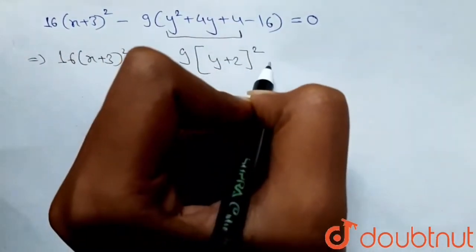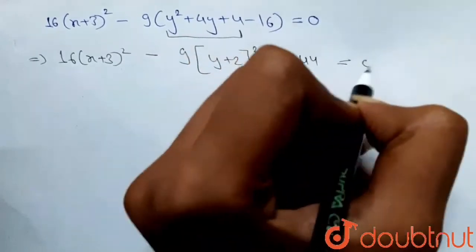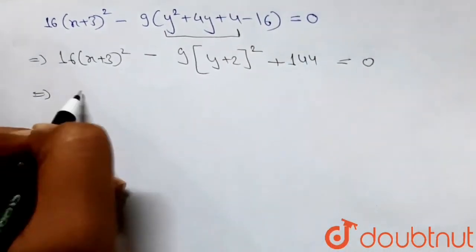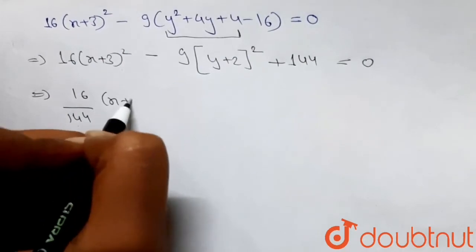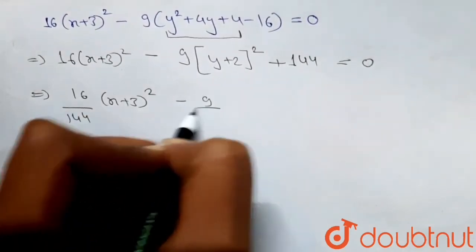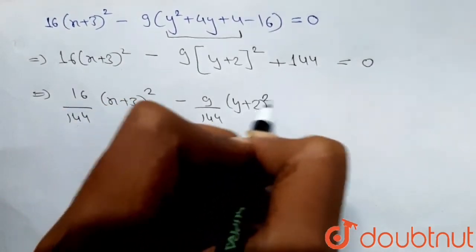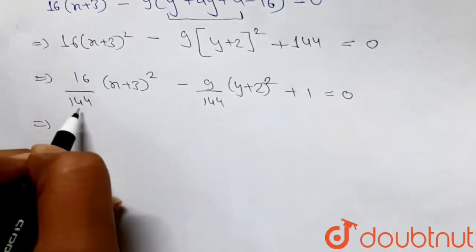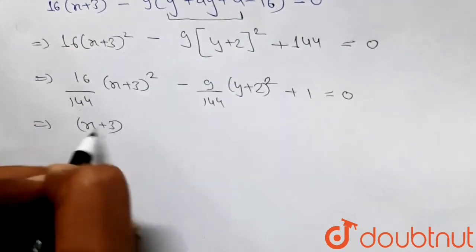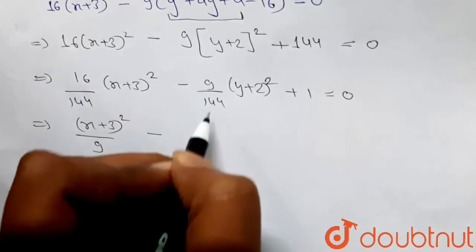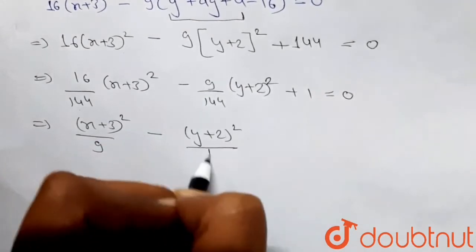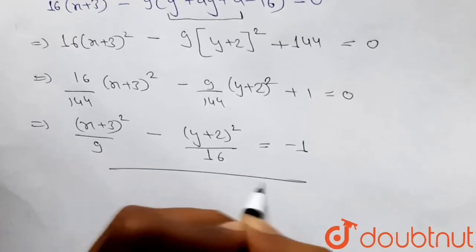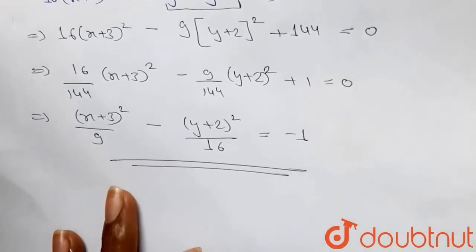Dividing everything by 144: (16/144)(x+3)² - (9/144)(y+2)² + 1 = 0. This simplifies to (x+3)²/9 - (y+2)²/16 = -1, which is the final locus equation for the point under the given conditions.